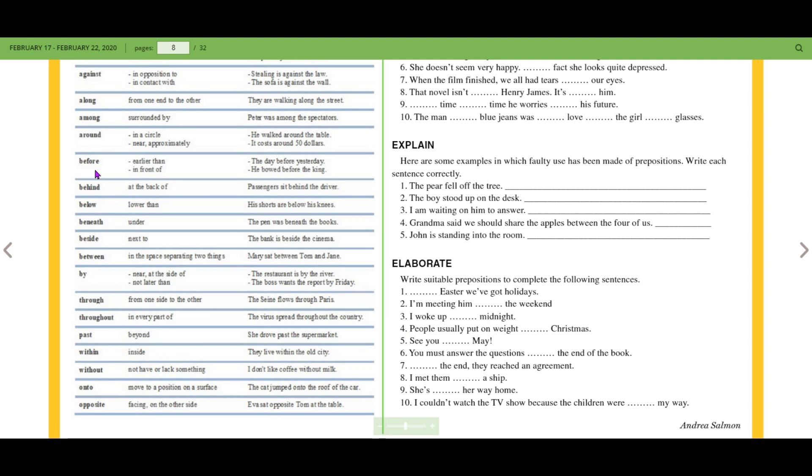We have before: earlier than or in front of - the day before yesterday, he bowed before the king. Behind: at the back of - passengers sit behind the driver. Below: lower than - his shorts are below his knees. Beneath: under - the pen was beneath the books. Beside: next to - the bank is beside the cinema. Between: in the space separating two things - Mary sat between Tom and Jane.